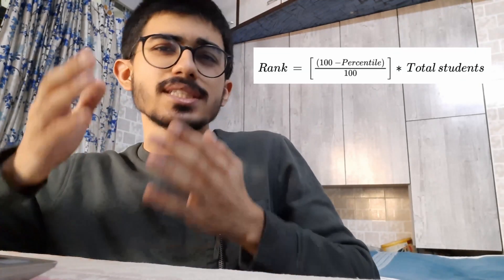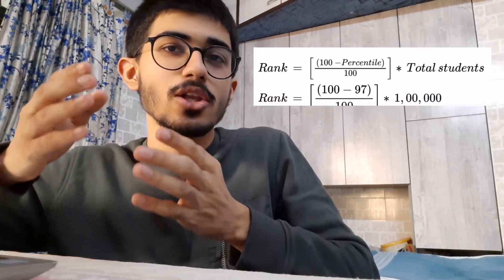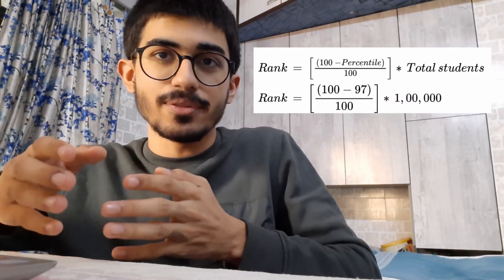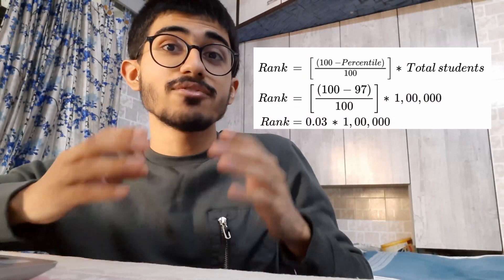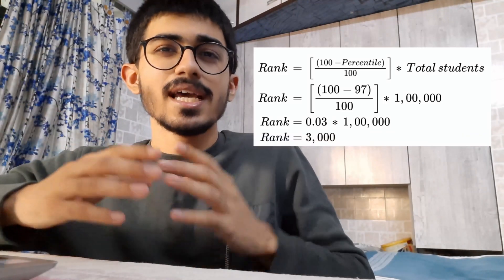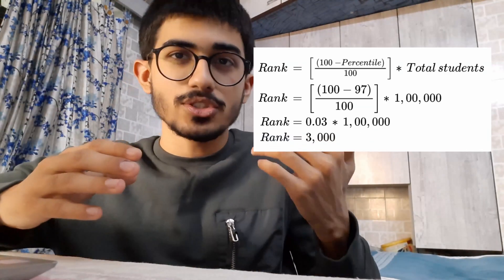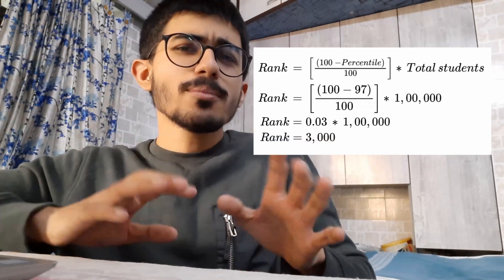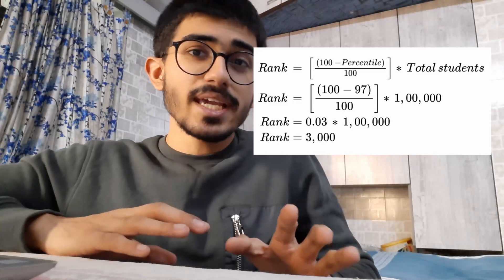There is a formula for calculating the rank using your percentile: Rank = (100 minus percentile) divided by 100, into the total number of students giving the exam. For example, if there are 1 lakh students giving the exam and you get a percentile of 97, you would have 0.03 into 1 lakh, that is around rank 3000. The total number of students will vary but the formula remains the same.